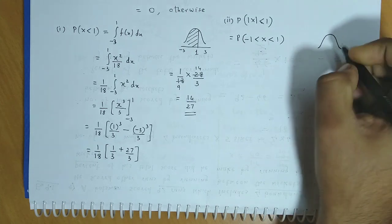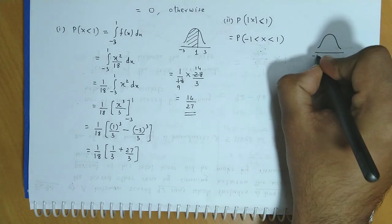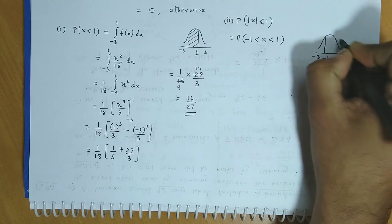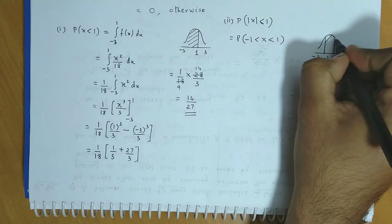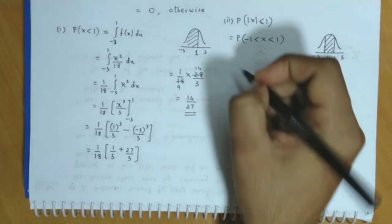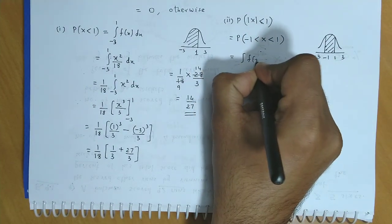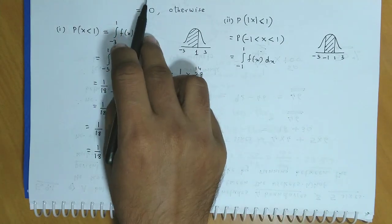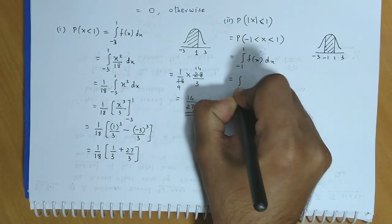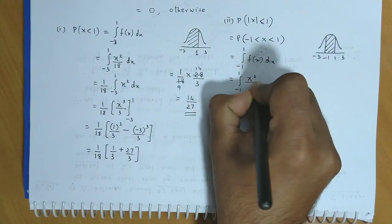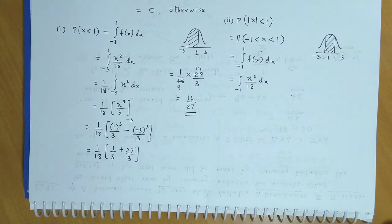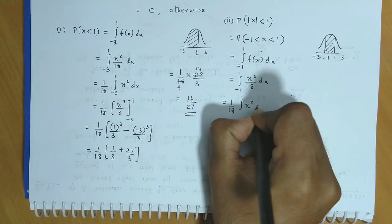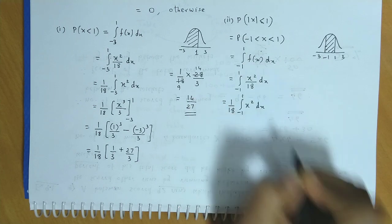So this is our distribution curve, from minus 3 to 3. This is the complete distribution, but we integrate from minus 1 to 1. So we integrate f(x) from minus 1 to 1. Now f(x) is x² by 18. We factor out 1 by 18, giving the integration of x² dx from minus 1 to 1.